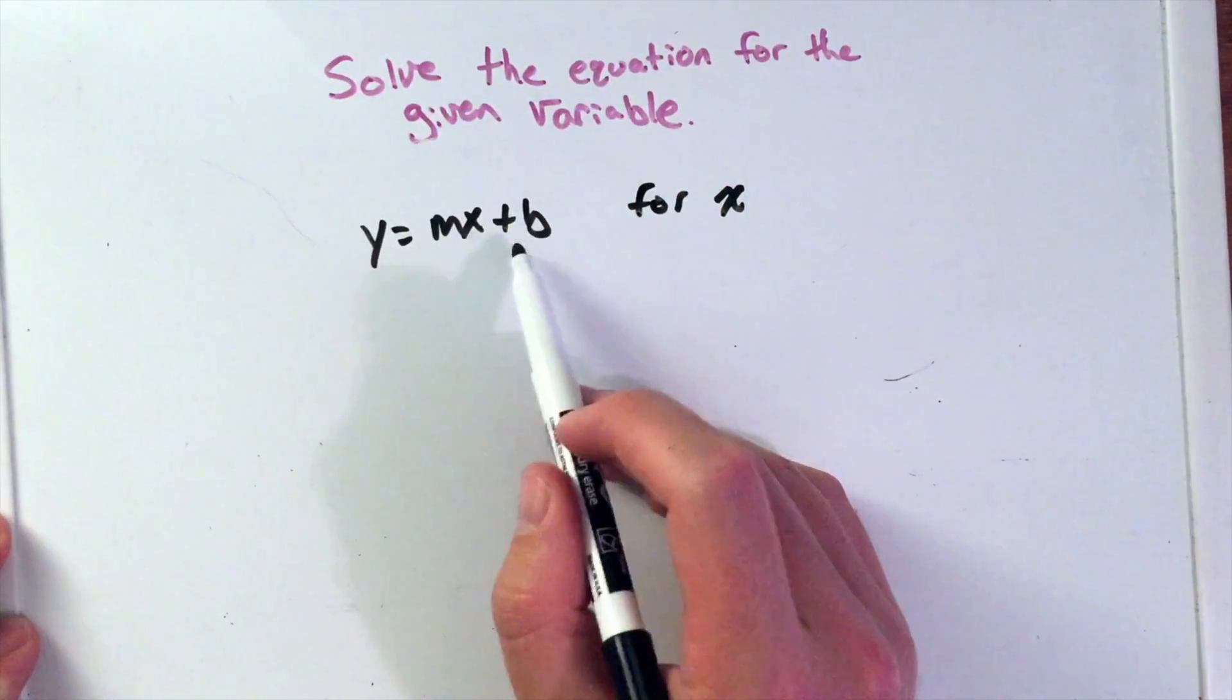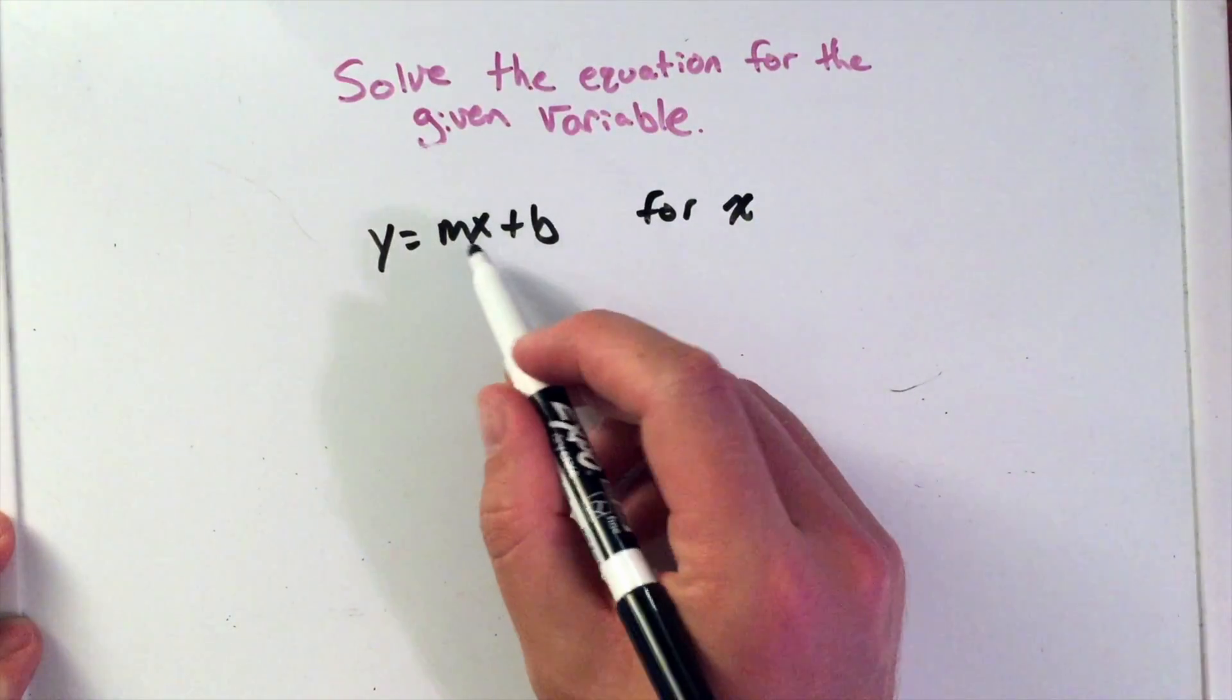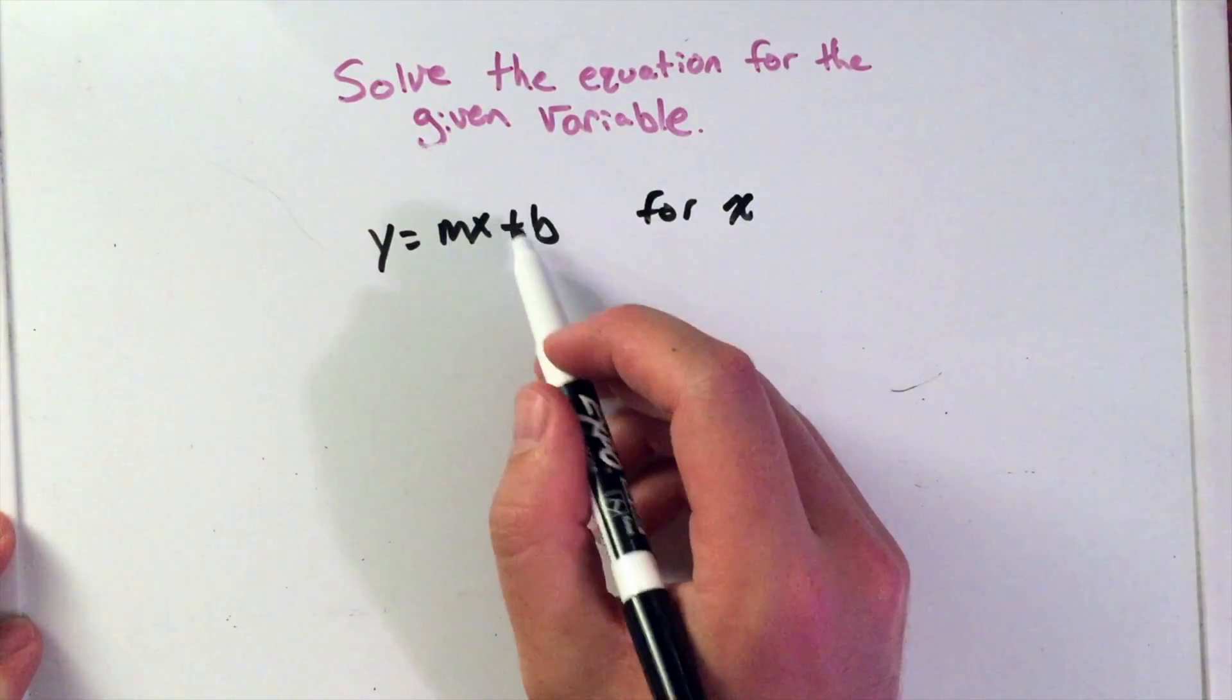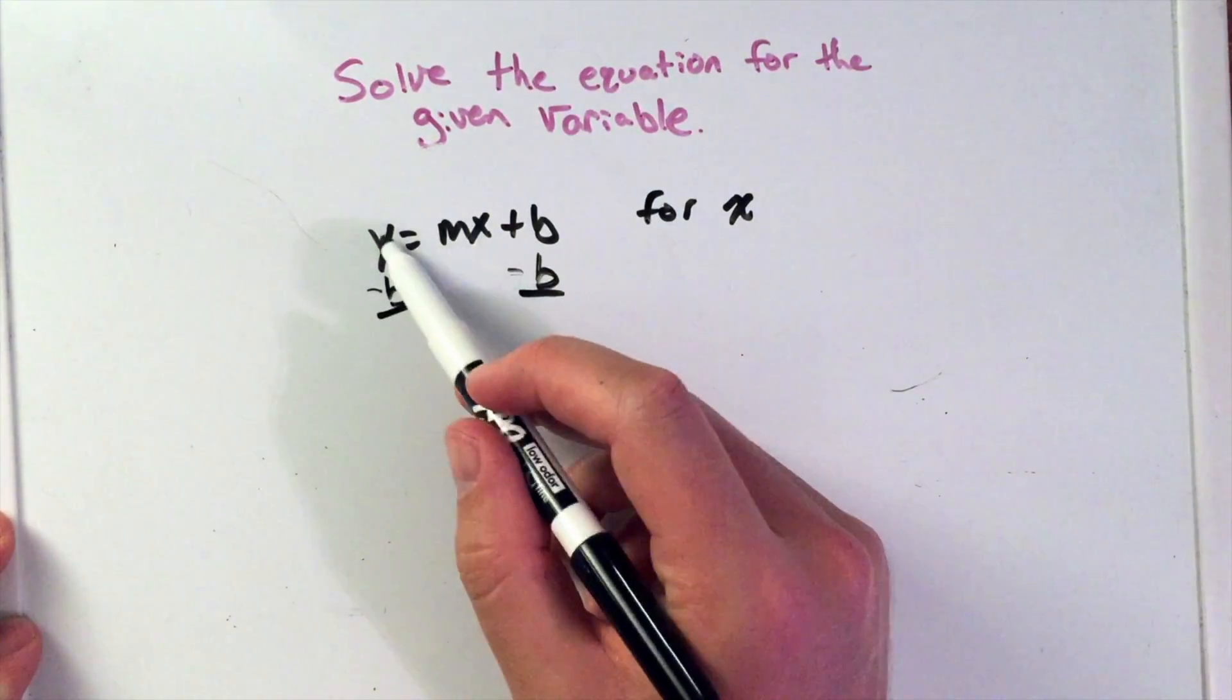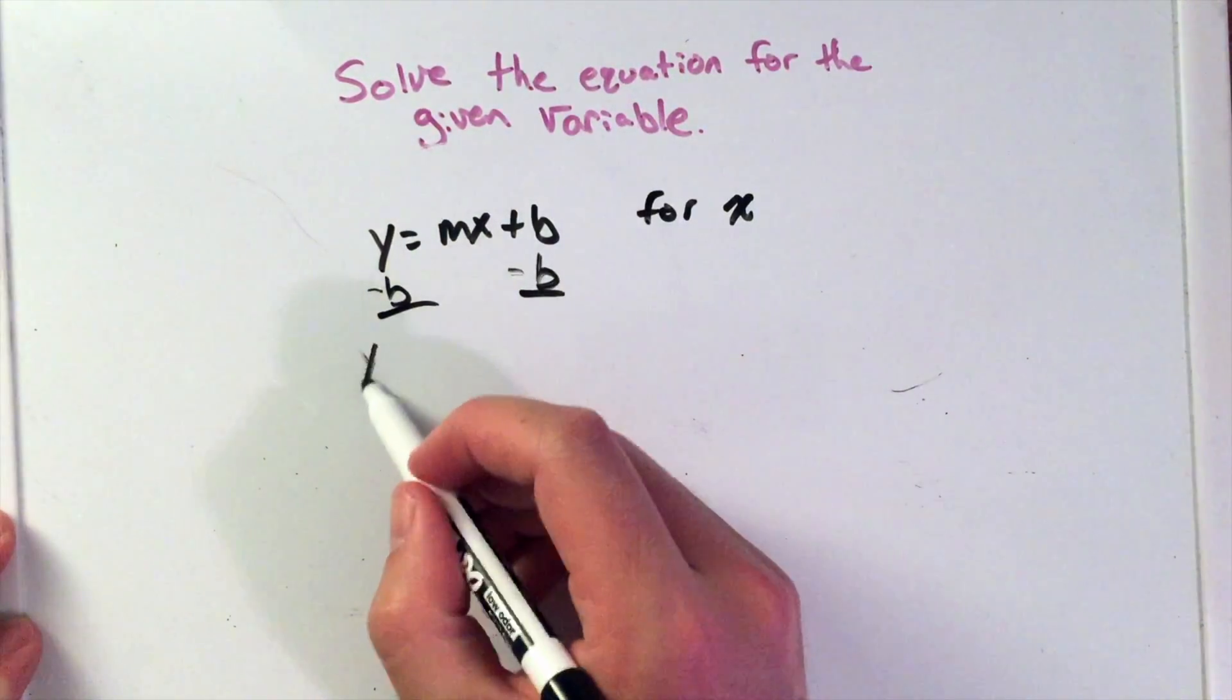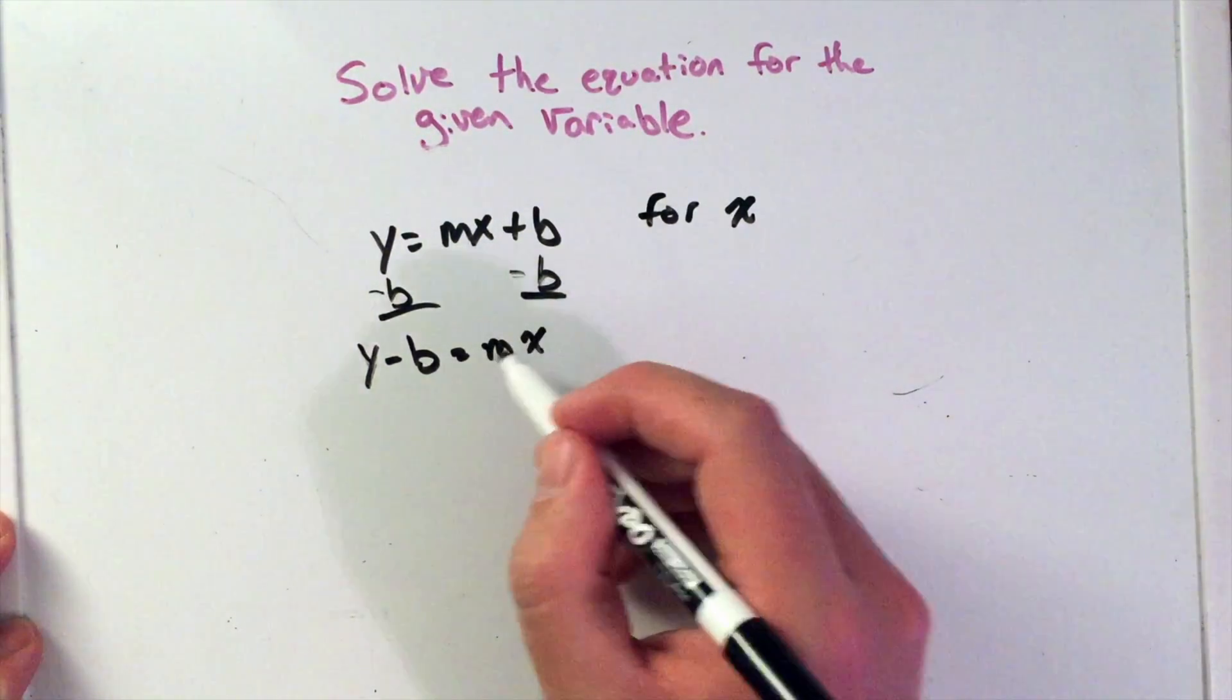We have our two parts here. I see y equals mx plus b, I want to get that x by itself. So to counteract this plus b, I'm going to subtract b from both sides, and these are not like terms, y and b, so I have y minus b equals mx.